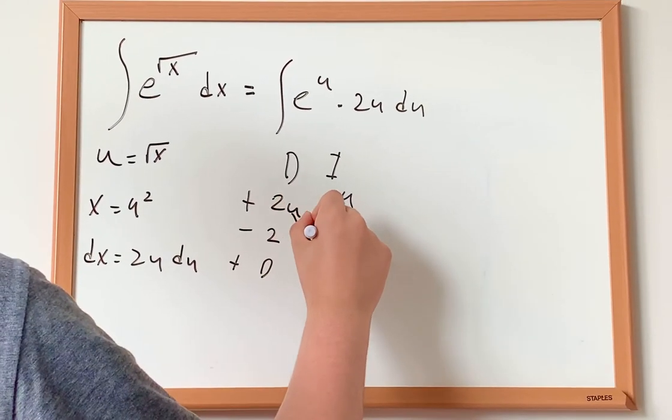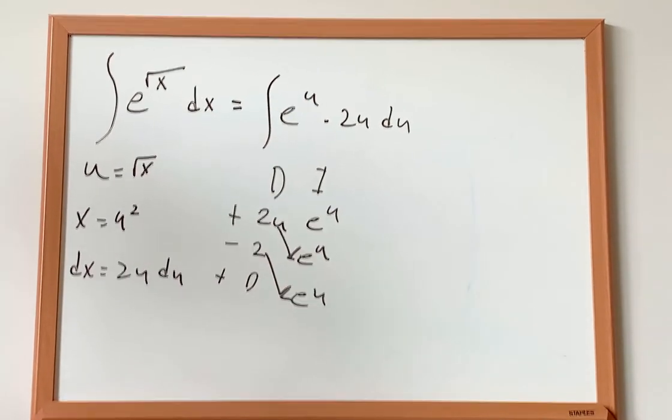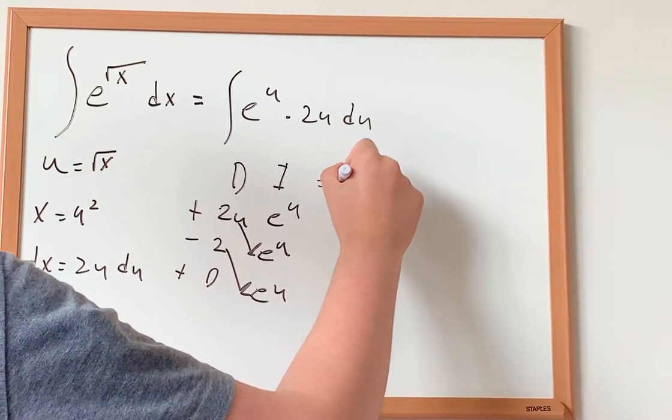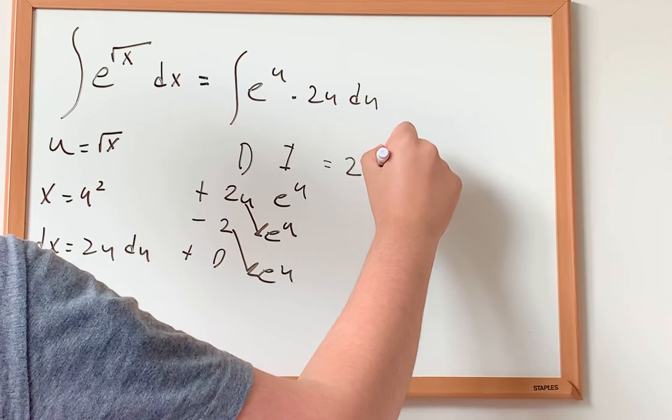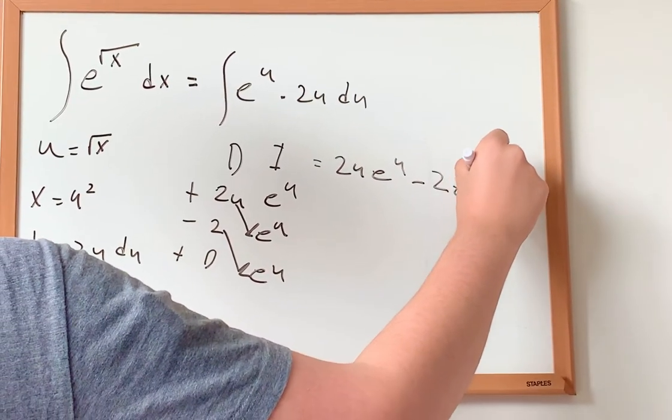So now I multiply this and this and then this. So for my final answer, I get 2u multiplied by e to the power of u and then minus 2 times e to the power of u.